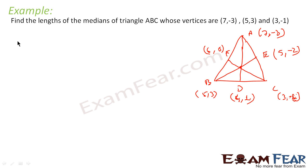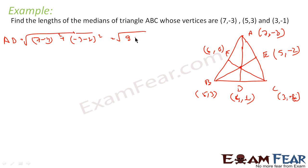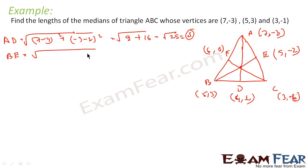Using the distance formula: AD = √((7-4)² + (-3-1)²) = √(9 + 16) = √25 = 5. So median AD = 5. Similarly, BE = √((5-5)² + (3-(-2))²) = √(0 + 25) = 5. So median BE = 5.